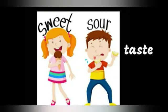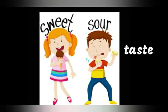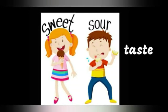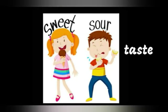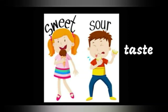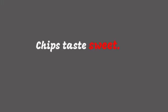Next one — taste. We can describe taste also. Now I am going to ask one question: the vegetable bitter gourd — what is the taste of that vegetable? The name itself has the taste. Can you guess that? Yes, bitter! See the picture — sweet, sour, and so many examples are here. We can use these words to describe taste. See this example: Chips taste sweet. Sweet is a word that describes the taste of chips, so sweet is an adjective word.